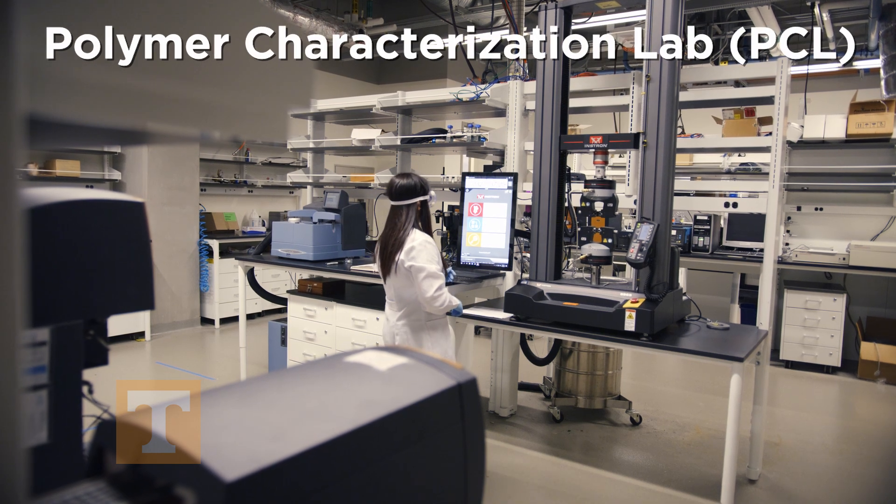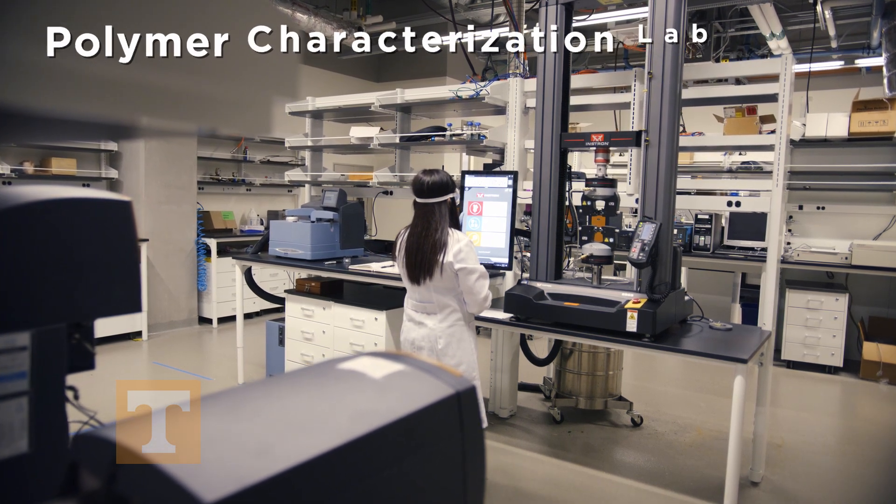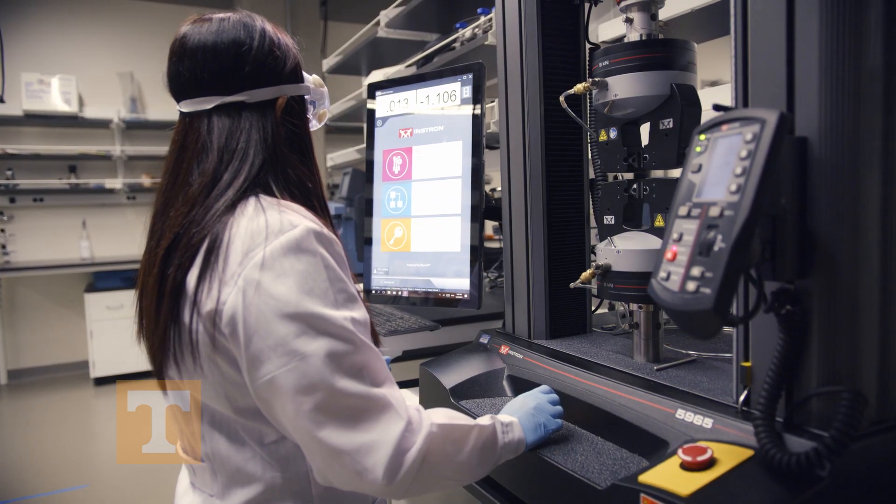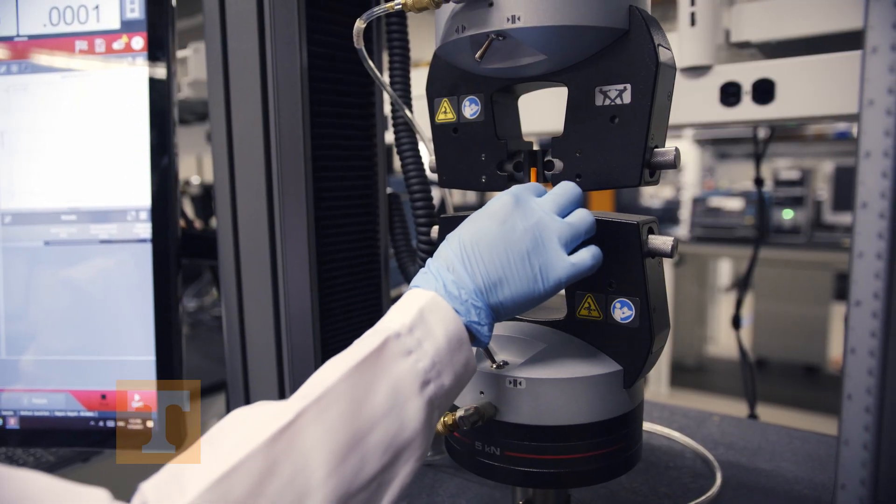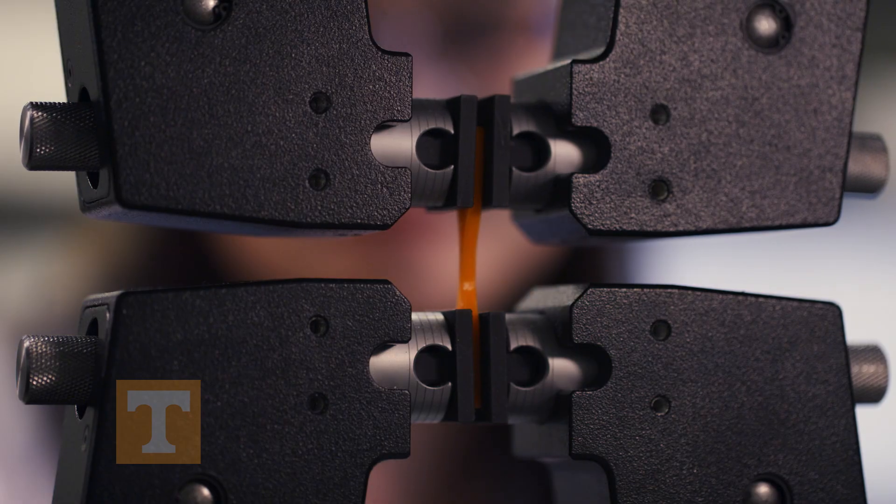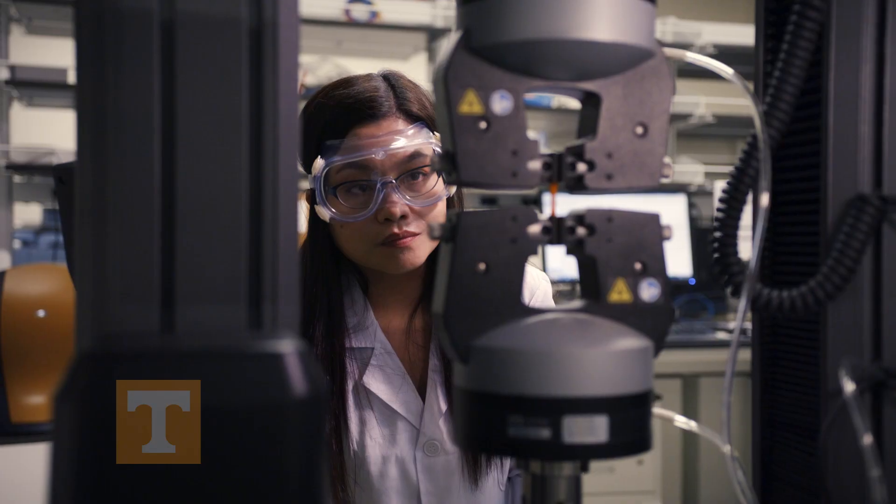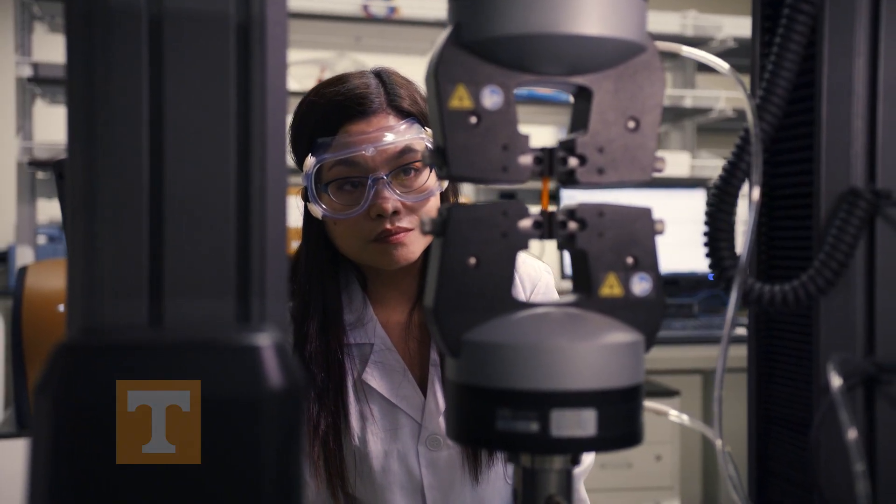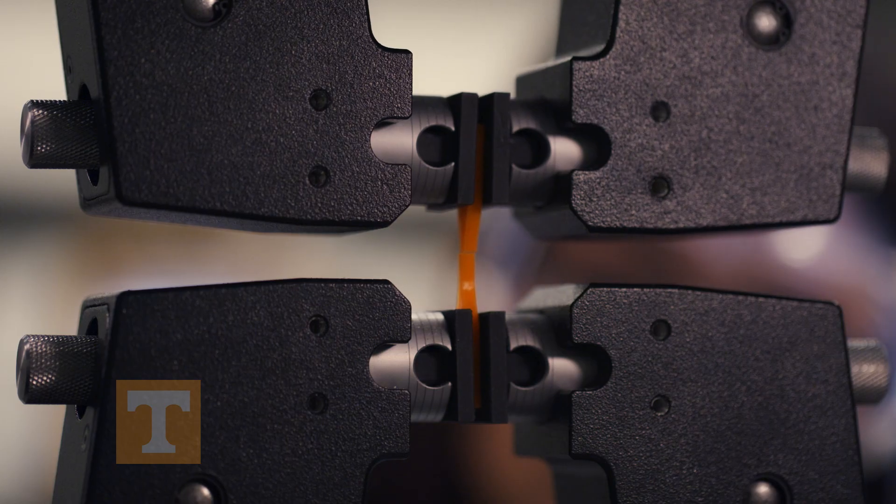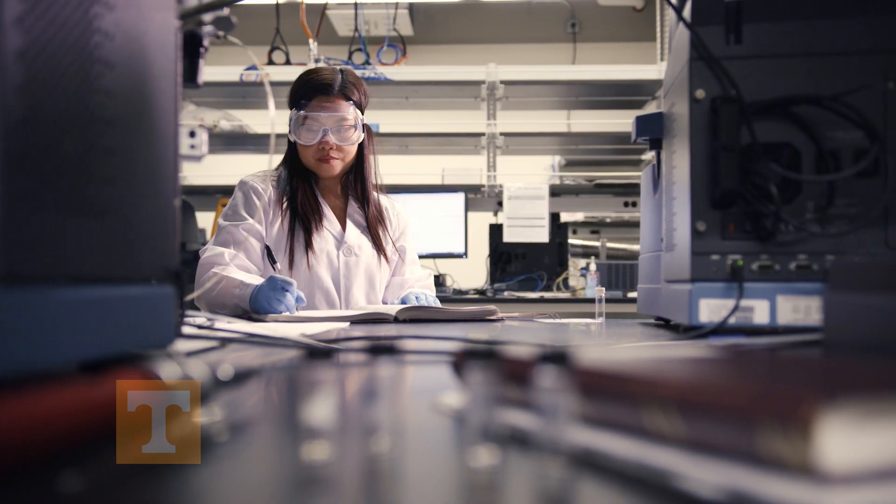The Polymer Characterization Lab, PCL, is one of the premier academic labs in the world for characterizing novel properties of newly designed polymeric materials. The equipment provides information on polymer properties from the molecular scale to macroscopic, as well as structural and flow properties.